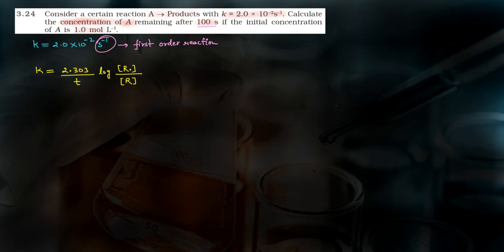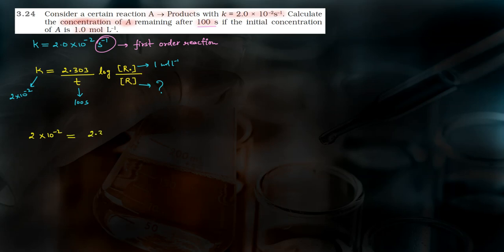Now, what values are given here? We are given K equals 2 into 10 to the power minus 2. We are given T, which is 100 seconds. R-naught, the initial concentration, is given as 1 mole per liter. We need to find the value of R. Now, substituting: K equals 2 into 10 to the power minus 2 equals 2.303 divided by 100, log of R-naught 1 divided by R.